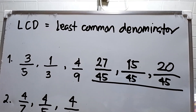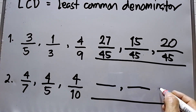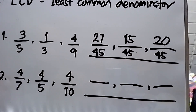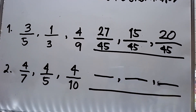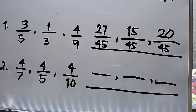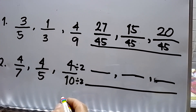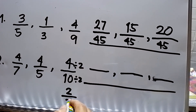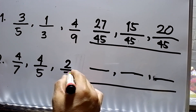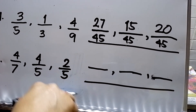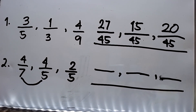Now let's go to number two. We have to find the LCD of seven, five, and ten. First I need to reduce one fraction — I will divide by two: ten divided by two is five. So the new fraction is two over five. Now I have two denominators of five and one seven, so I'll just multiply: 5 times 7, which gives us 35.